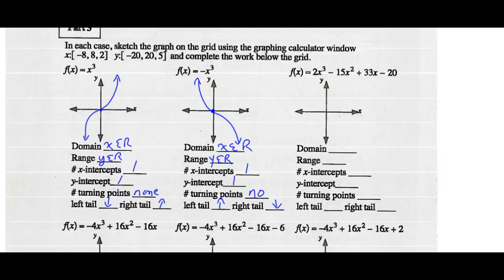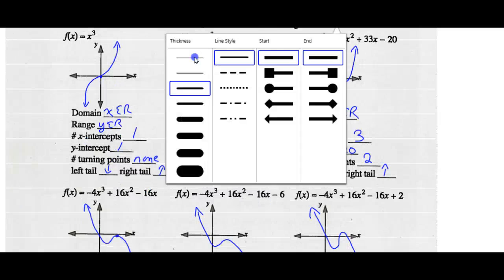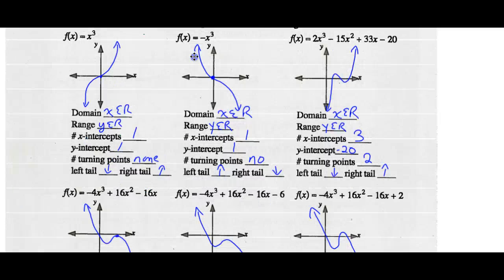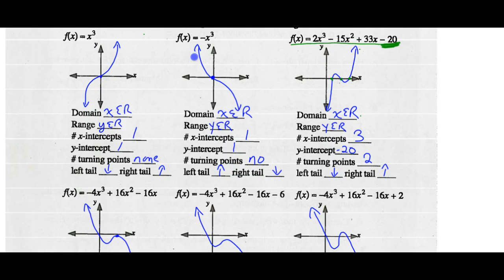For f(x) = 2x³ − 15x² + 33x − 20: domain x is any real number, range y is any real number. There are three x-intercepts. The y-intercept is at negative 20 — the constant term — so it's way down. There are two turning points. The left tail goes down and the right tail goes up.